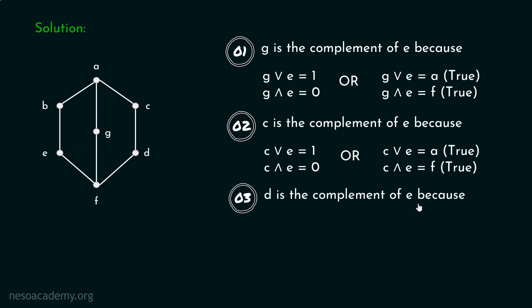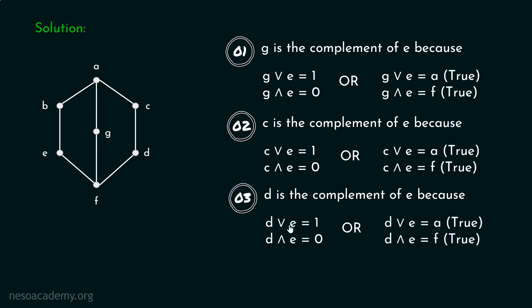D is also the complement of E because D ∨ E = 1 and D ∧ E = 0, or equivalently, the least upper bound of D and E is A and the greatest lower bound of D and E is F. Hence D is the complement of E.